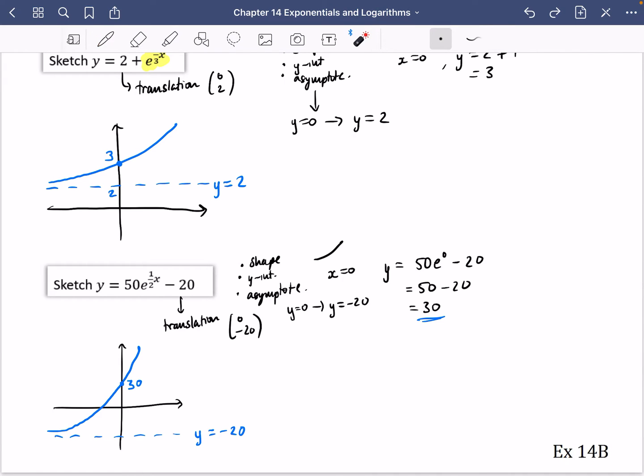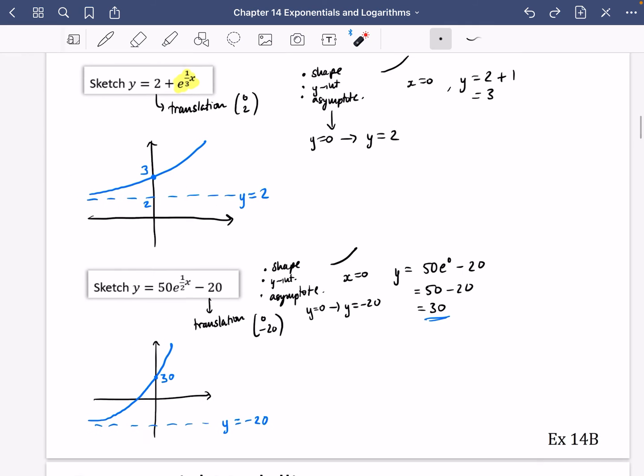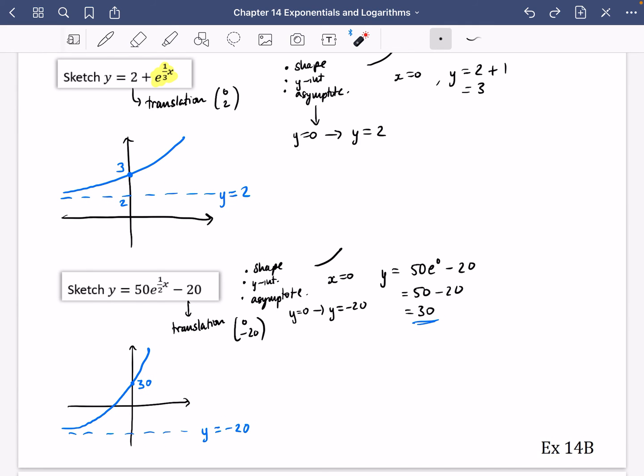Just to quickly recap, we looked at the shape for this, which we knew was going to be an upwards exponential. The y-intercept we found was 30. So we marked that on. The asymptote had been translated 20 spaces down. So we had it starting like this down here and whoosh, shooting upwards through to 30. So what I'd like you to try now is exercise 14b, which is going to be a combination of sketching e-graphs as well as some differentiation.